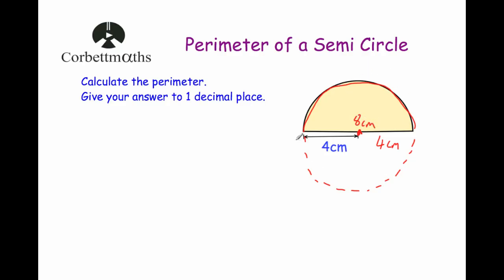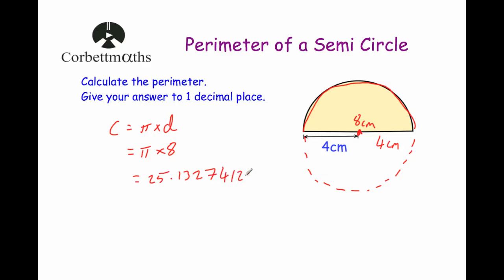So to get the circumference of the whole circle, the circumference equals pi times diameter. So we're going to do pi times 8. Pi times 8 gives us the whole way around the outside of the circle, which is 25.13274123. Now don't round that answer — I tend to keep it on my calculator display. We didn't want the whole circle; we only actually want the length of the arc, which is halfway around the circle.